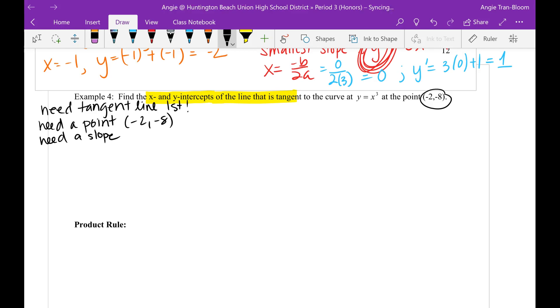So now let's find the slope. We know how to find the slope. The slope is going to be y prime. The derivative of y equals x cubed is 3x squared.